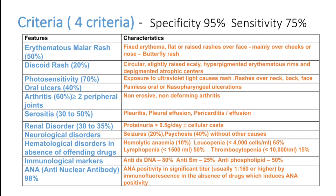Polyserositis is seen in 30% to 50% — patients can get pleuritis, pleural effusion, pericarditis, and pericardial effusion. Kidney disorders are seen in around 30% to 35% of patients, who can have proteinuria or renal failure. Neurological disorders are seen in nearly 20% to 40% — patients can have psychosis, seizures, and neuropathy.